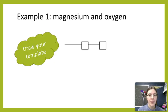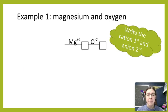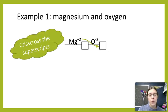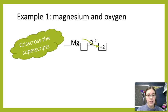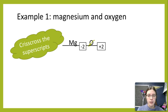Okay, so let's work through an example. We have magnesium and oxygen, and we have our template set up here. So magnesium is plus two, and it goes on the first line. Oxygen is minus two and goes on the second line. We're then going to crisscross those superscripts and fill in the boxes. So the positive two from magnesium goes into that second box, and then the minus two from the oxygen goes into the first box.